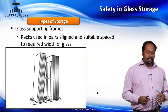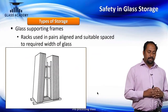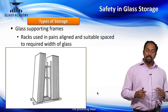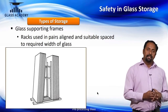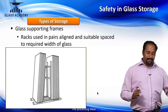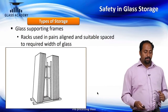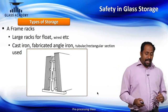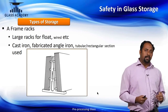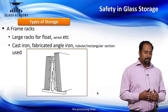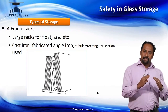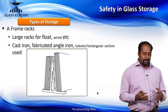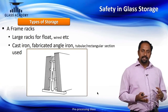Another storage method is glass supported on frames — racks used in pairs, aligned and suitably spaced based on the required width of the glass. The picture clearly shows glass stored on both sides of a frame at a safe angle of inclination. There is also the A-frame — a very common method used both for storage and transportation. It is shaped like an A-frame with cast iron or fabricated angle iron, allowing glass to be stored on both sides.